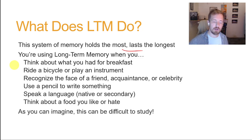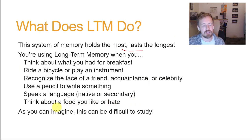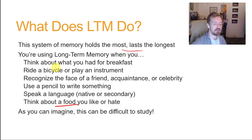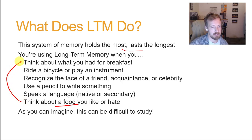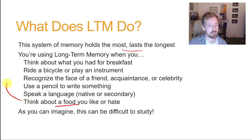Long-term memory incorporates so many different facets — taste aversion, procedural skills, face recognition, language — which is what makes it so hard to study. Findings from one type of long-term memory, like taste aversion, may not be identical to findings about how to ride a bike. We'll be spending the rest of the semester pretty much exploring these different components.